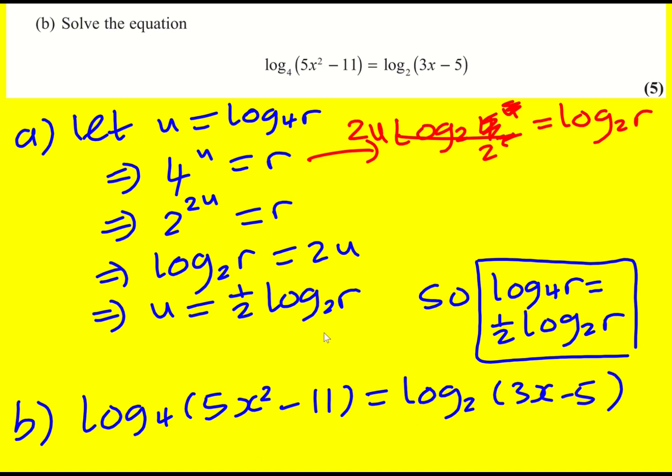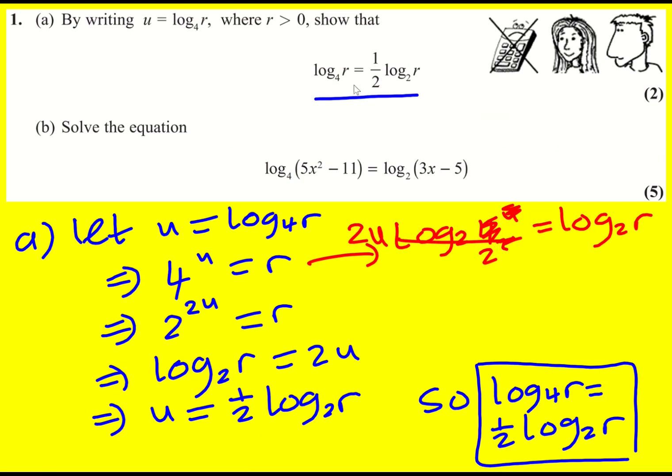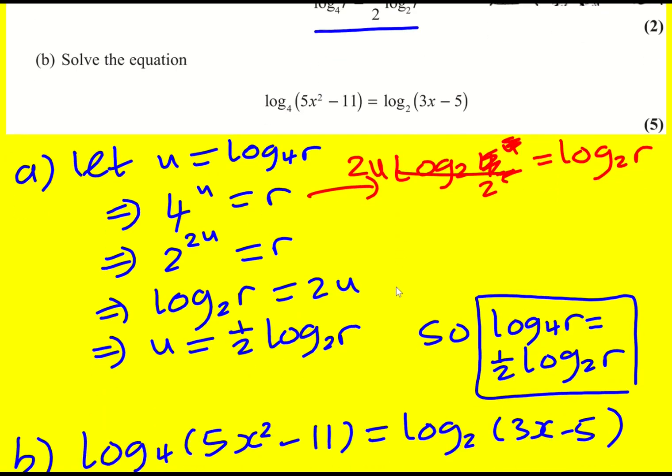Now these are different bases so this seems an issue except we've just shown that we can just change the base to 2. Of course you could do the equivalent you could say that log to base 2 is 2 log to base 4 of r but I'll stick with the result that they've kind of given.